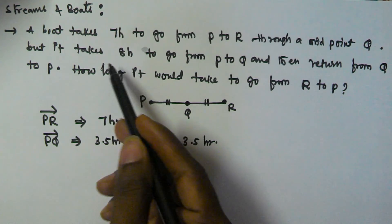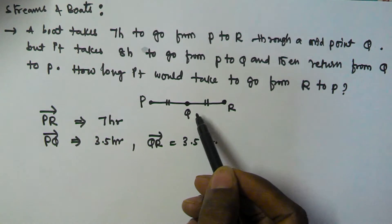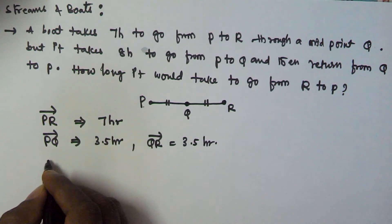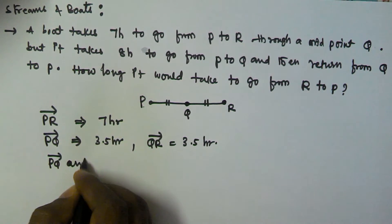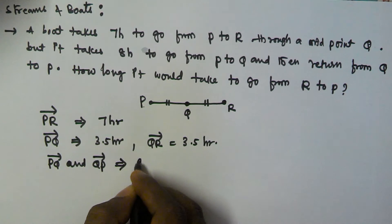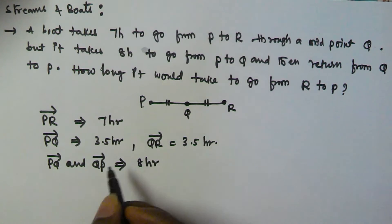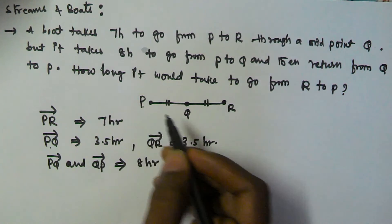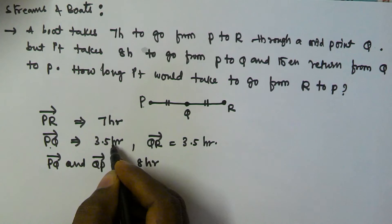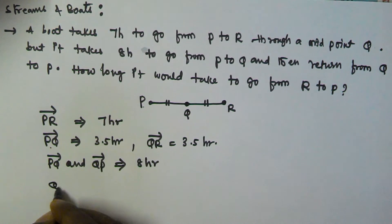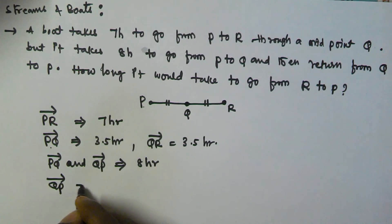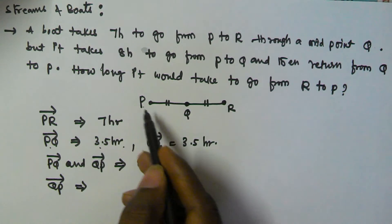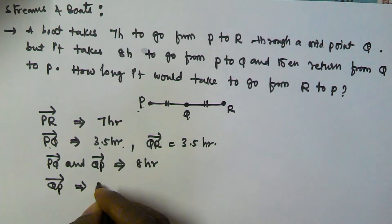Next, it is given that it takes 8 hours to go from P to Q and then return Q to P. So P to Q plus Q to P is 8 hours. We already know that P to Q is 3.5 hours. So Q to P is going to be 8 minus 3.5, which equals 4.5 hours.